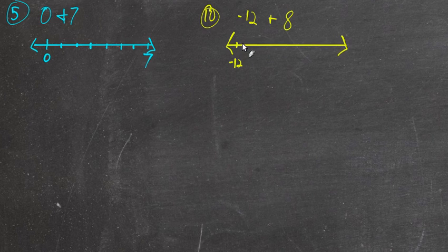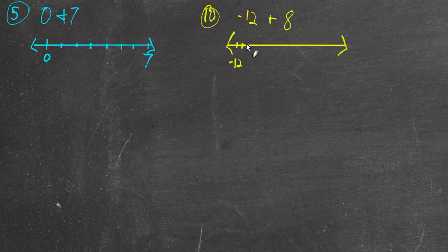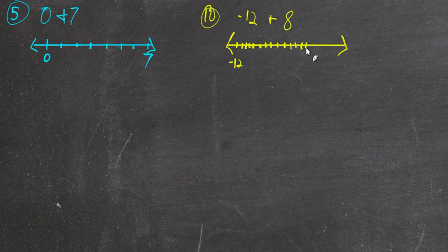Let's try and make it fit. So this would be negative 11 — negative 11 being bigger than negative 12 — then 10, 9, 8, 7, 6, 5, 4, 3, 2, 1, 0... then 5, 6, 7, 8.